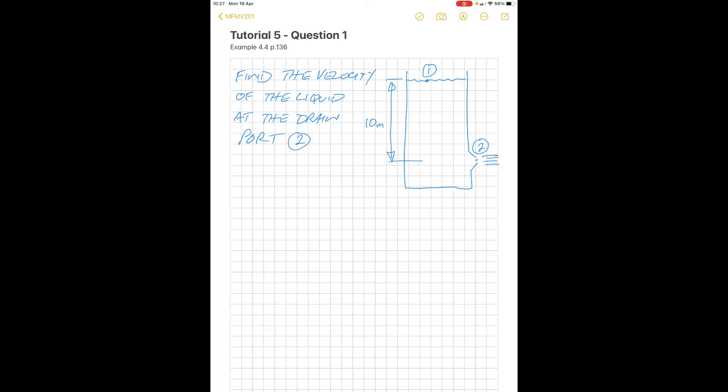This is Tutorial 5 Question 1 in your textbook, page 136 example 4.4. In this question we're looking at the application of Bernoulli's principles. We have a tank with an exit at the bottom, a drain port at point 2. The height of the fluid, which is water, above that exit port is 10 meters.